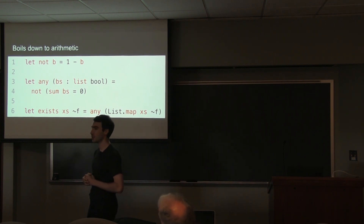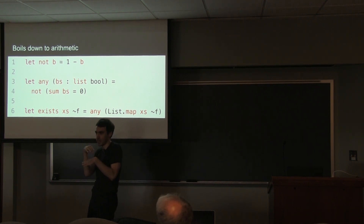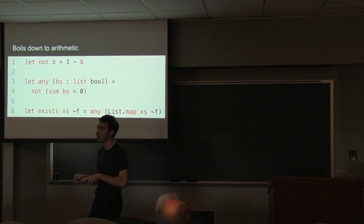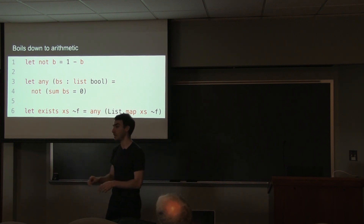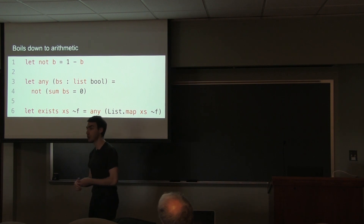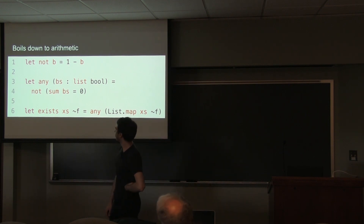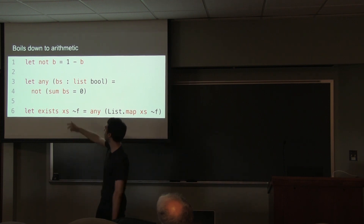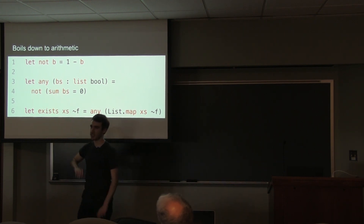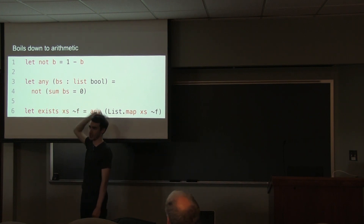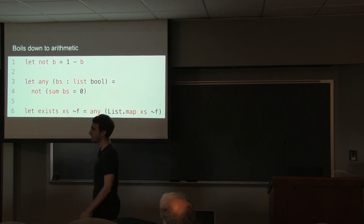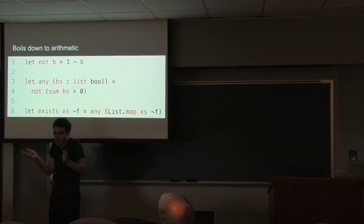In reality, it's a list of field elements. Bool is really a field element, hidden under an abstract type. Under the covers it's a field element which happens to be constrained to be either 0 or 1. You add them all up — that's counting the number of them which are true. And then you say they're all false if, when you add them all up, the number which are true is 0. You have to be kind of tricky like this.